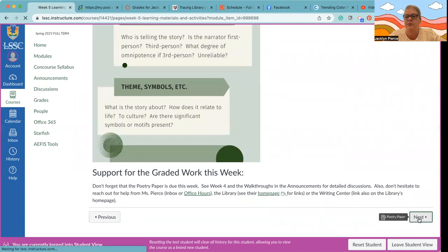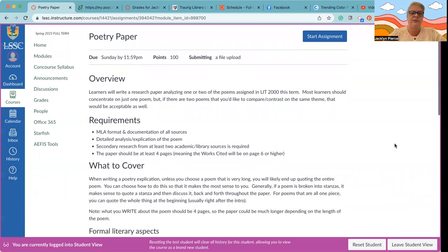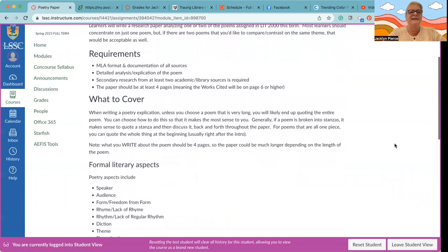Then of course you will get to the graded assignment if you click the next button, or we can go back to the module page and get it. But this is going to be the link to submitting the poetry paper. You can choose any one or two—you shouldn't do more than two poems. If there's two poems that you'd like to compare and contrast, that's fine, but most of the time you would want to stick to a single poem.